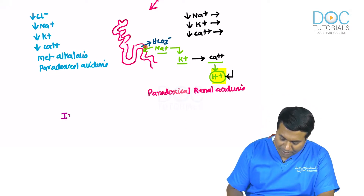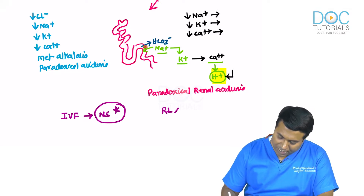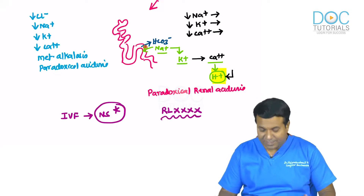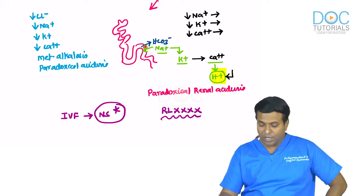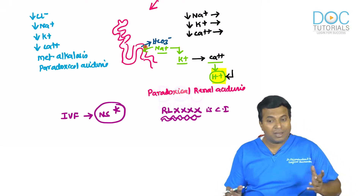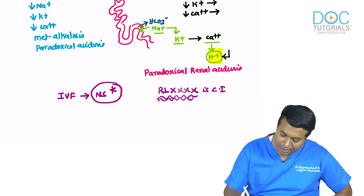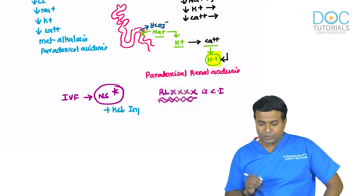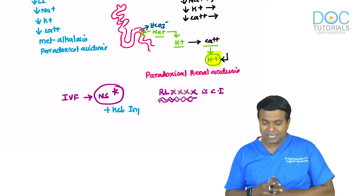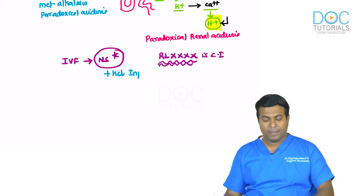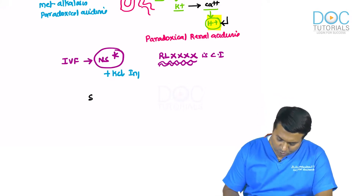Treatment: fluid of choice is normal saline with injection KCl. Ringer's lactate is contraindicated — the lactate component can exacerbate aciduria. Perform stomach wash with a wide-bore gastric lavage tube for 1–2 days before sending for upper GI endoscopy (investigation of choice) to identify the cause.